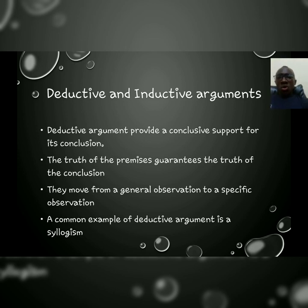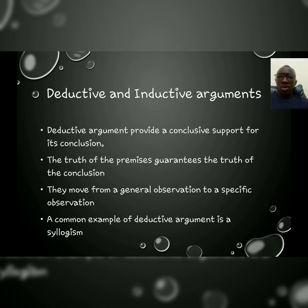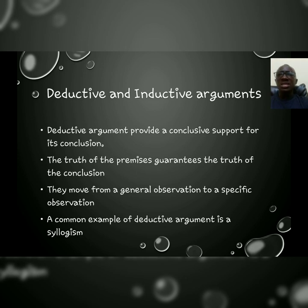Now, we are always evaluating arguments. But to evaluate an argument very well, you need to know what form of argument we are making. So, in critical thinking, there are two forms of argument. We have deductive argument, from the word deduce, and inductive argument, from the word induce. Now, let's start with deductive argument. Deductive argument is a form of argument that provides a conclusive support for its conclusion — the premises give it a complete support. The truth of the premises guarantees the truth of the conclusion.